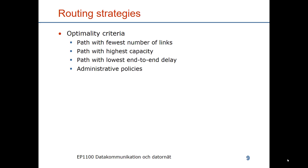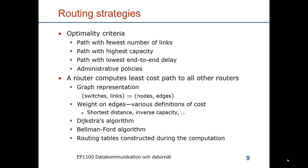The routing means that the router computes the least cost path to all other routers. We represent the network as a graph, which means that the switches and the links in the network are represented as nodes and edges — the edges being the lines between the nodes. We put weight on the edges, which corresponds to the cost of using that link. We could have this optimality criteria as being the shortest distance or the inverse of the capacity, so that the lower cost is better. We look at two algorithms for computing routes: Dijkstra's algorithm and Bellman-Ford algorithm, and we will look at how the routing tables are constructed during the computation.